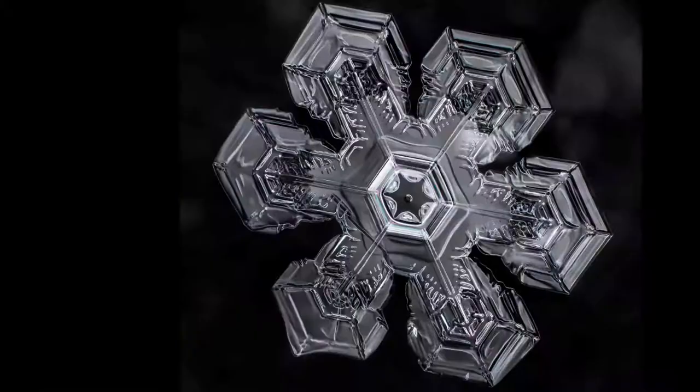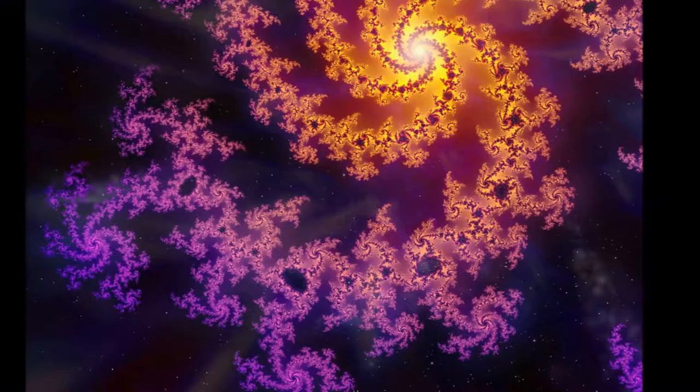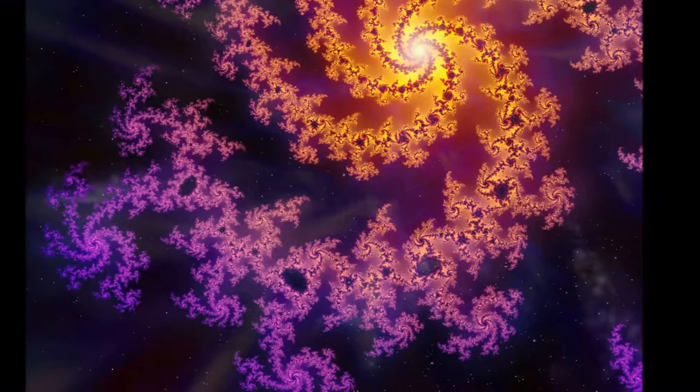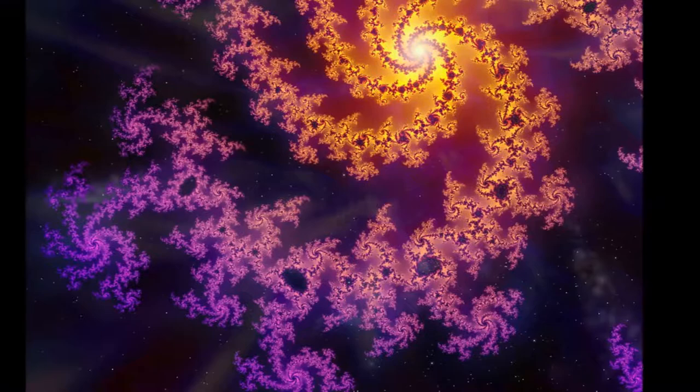In 1979, Mandelbrot discovered a set of numbers, now called the Mandelbrot set, described by science fiction writer Arthur C. Clarke as one of the most beautiful and astonishing discoveries in the entire history of mathematics.